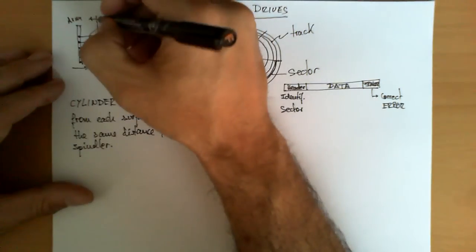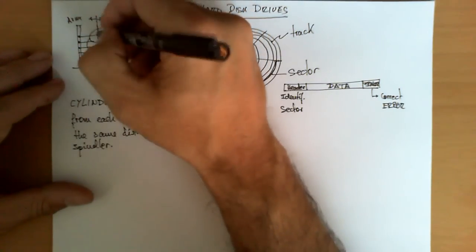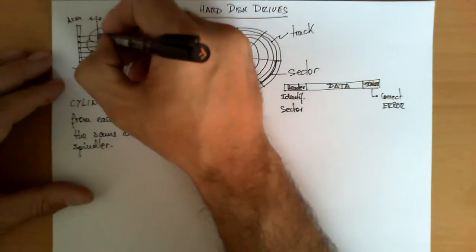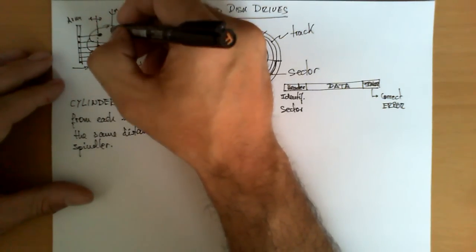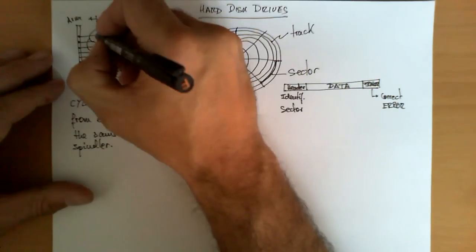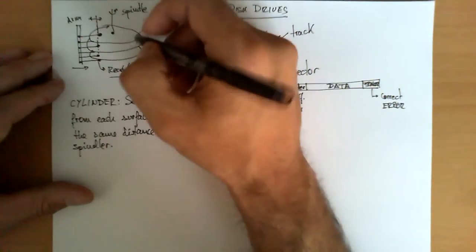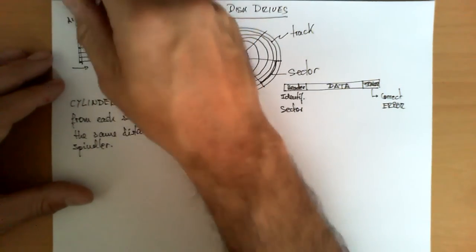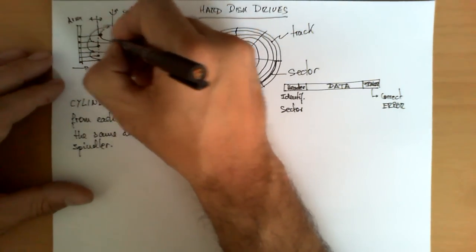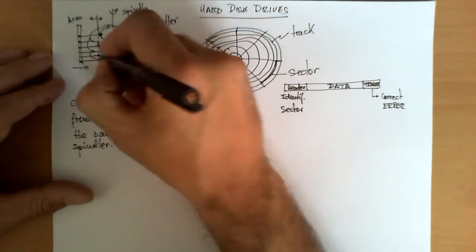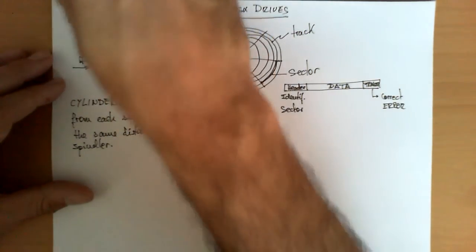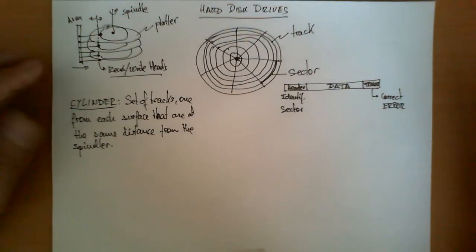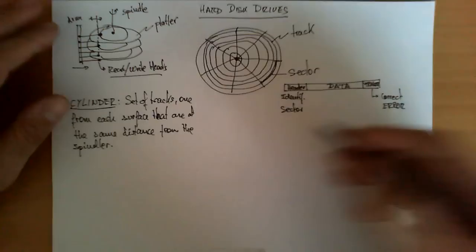So the concept of cylinder can be seen here. The heads are all of them at the same distance from the axis, from the rotation axis. Therefore, what I have is one, two, three, four, five, six heads right now reading six different tracks. If I look them from above, these tracks are actually organized as if it was a cylinder. And this is the concept of cylinder that is used to refer to how the disk is organizing the information.